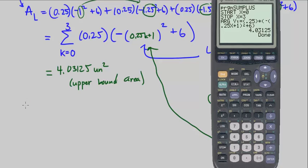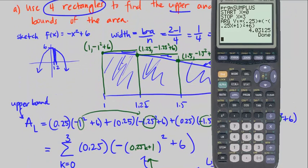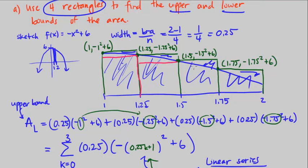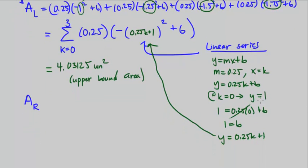We also want to find the lower bound area, which is going to be our right endpoint rectangles. Because if we use the right endpoint rectangles, that's going to create a rectangle below the curve. These here in pink are going to be our right endpoint rectangles. And we can get the area quickly using sigma notation by just changing the endpoints here. So that's going to go now from k equals 1 to 4.